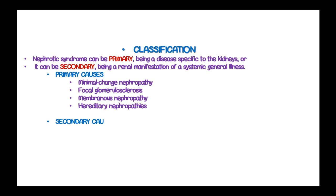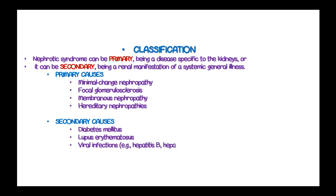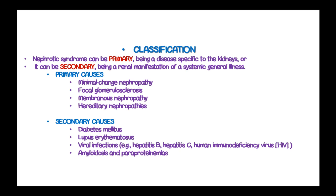In secondary nephrotic syndrome, the causes include diabetes mellitus causing diabetic nephropathy, lupus erythematosus, viral infections such as hepatitis B, hepatitis C, and HIV, amyloidosis, paraproteinemia, pre-eclampsia, and alloantibodies from enzyme replacement therapy.